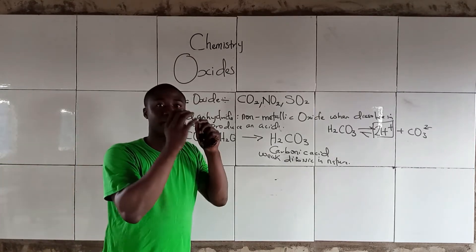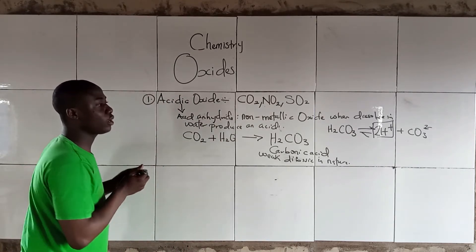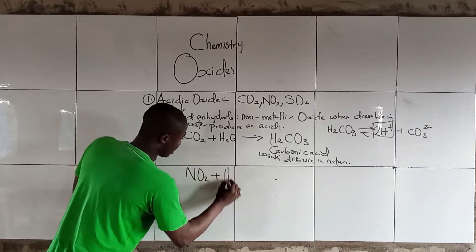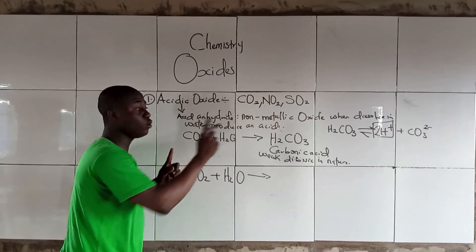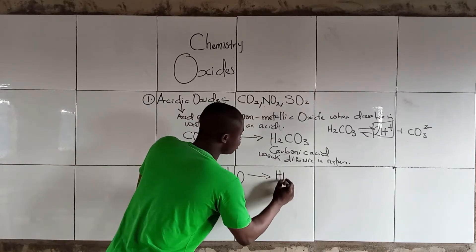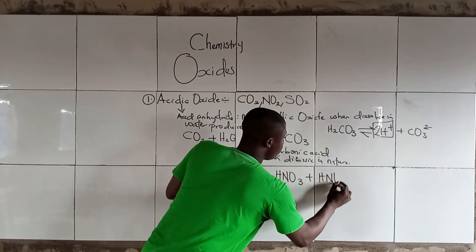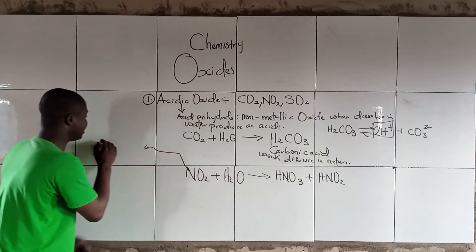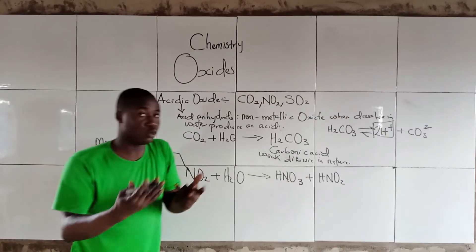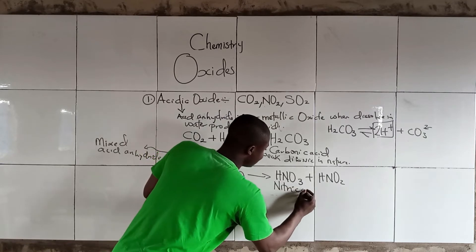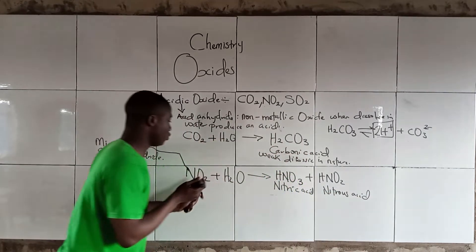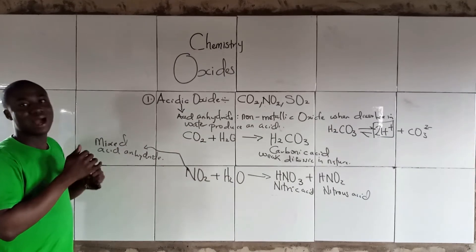We have another Oxide called the Basic Oxide. Before we discuss that, note that NO2 reacting with water produces not only one acid but two acids — HNO3 and HNO2. So NO2 is a mixed acid anhydride, because when dissolved in water it produces two acids: Nitric Acid and Nitrous Acid.